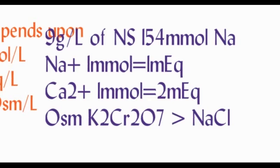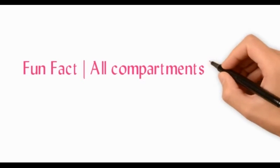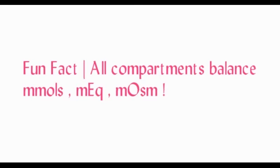If you compare sodium chloride and K2Cr2O7, since K2Cr2O7 has more elements, it will exert more osmotic force compared to NaCl. The fun fact is that all compartments maintain their molar concentration, electrical neutrality, and osmolar activity on either side of the cell membrane.